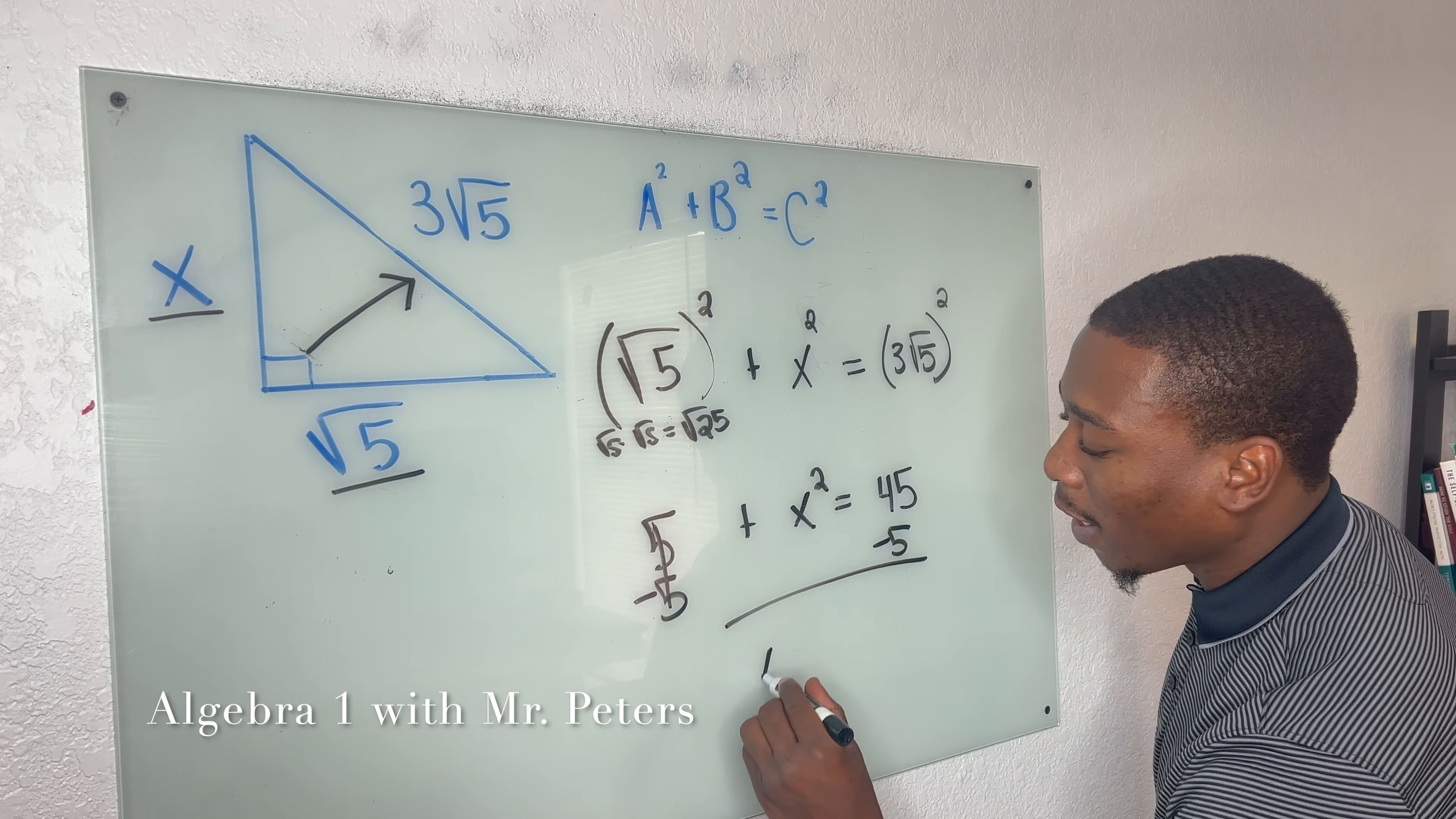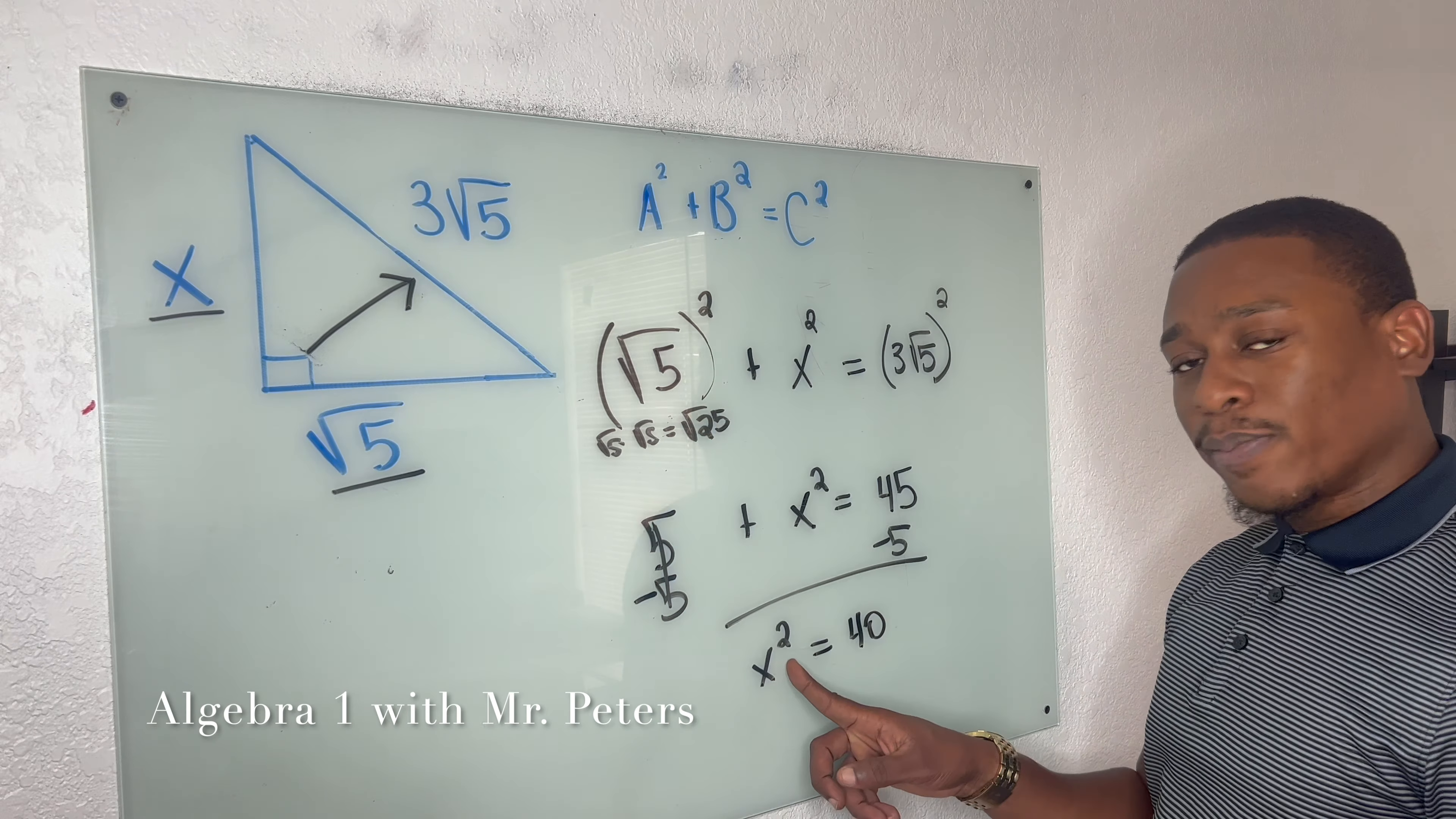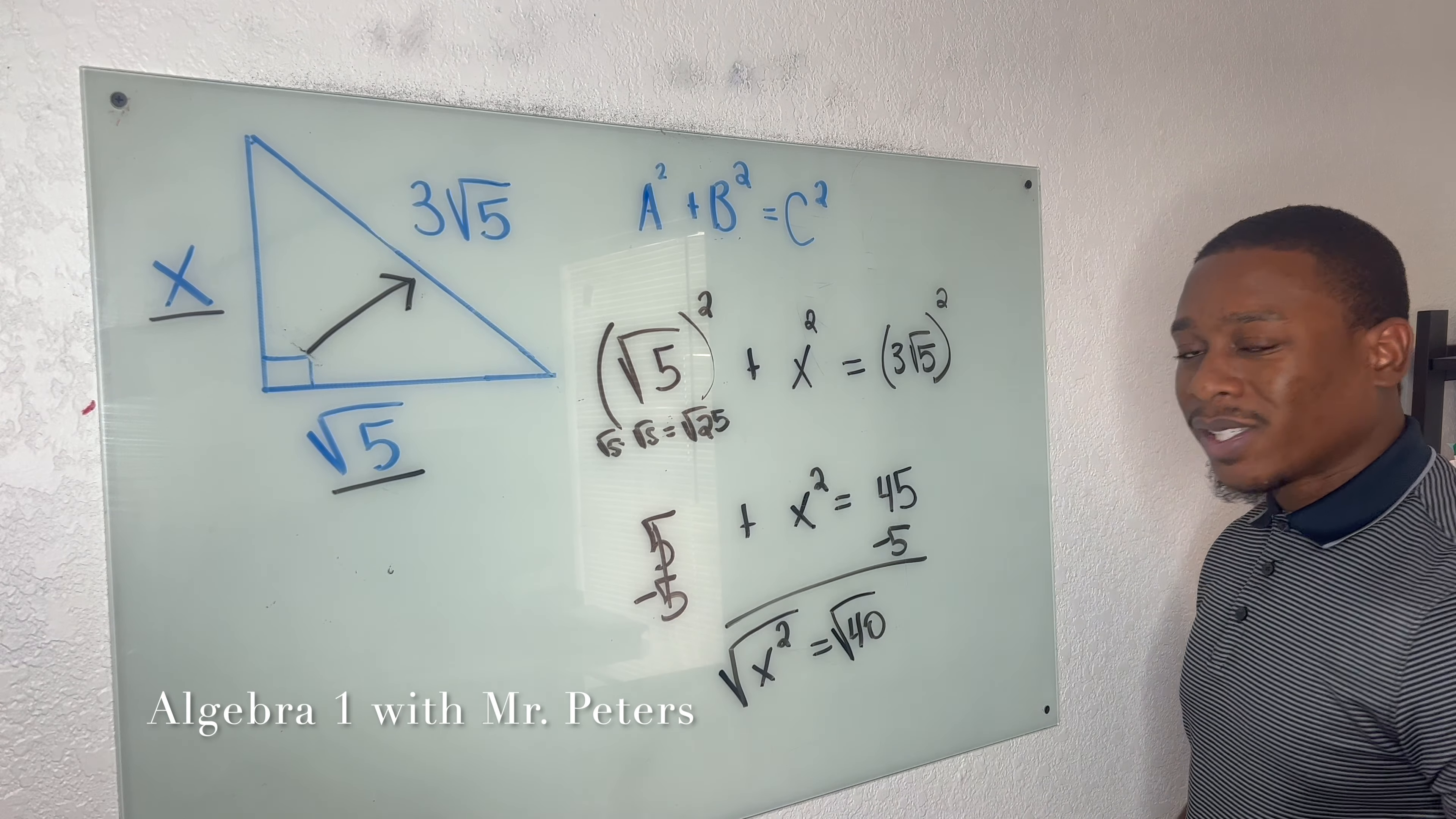We simplify this. We're going to get x squared is equal to 40. To get rid of this exponent, we're going to take the square root of it.